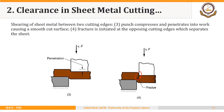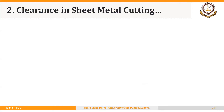The punch compresses and penetrates into the work, causing a smooth cut surface. Fracture is then initiated at the opposing cutting edges, which separates the sheet, as shown in figure four.